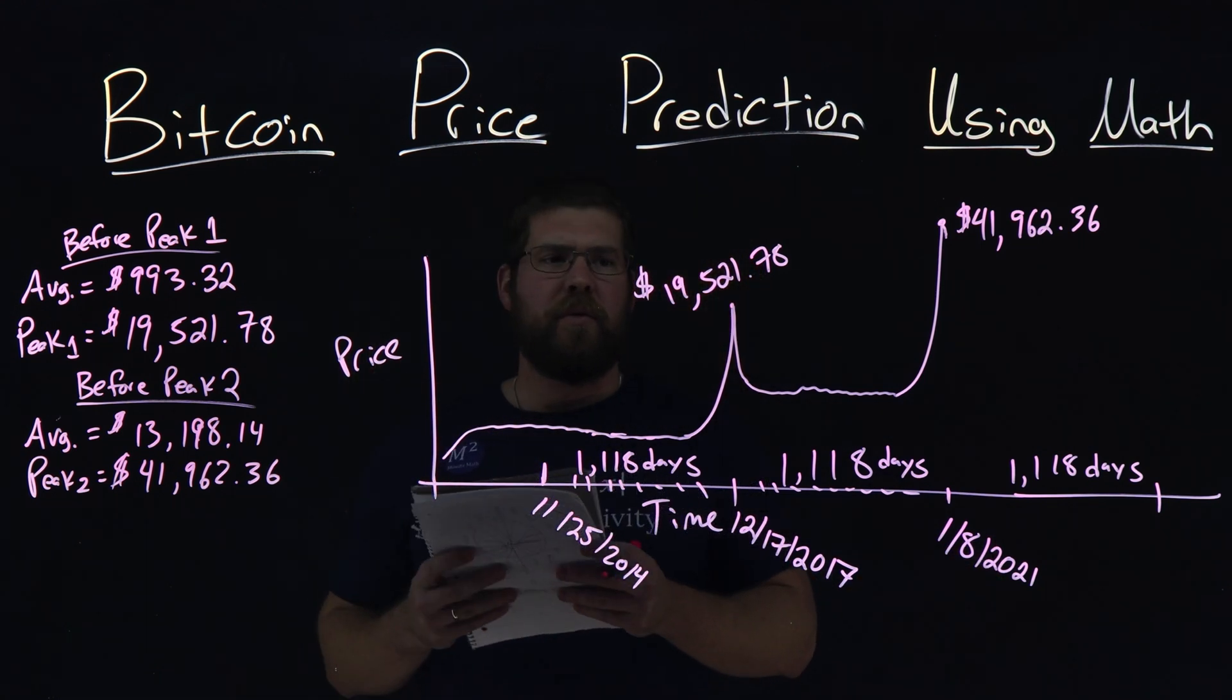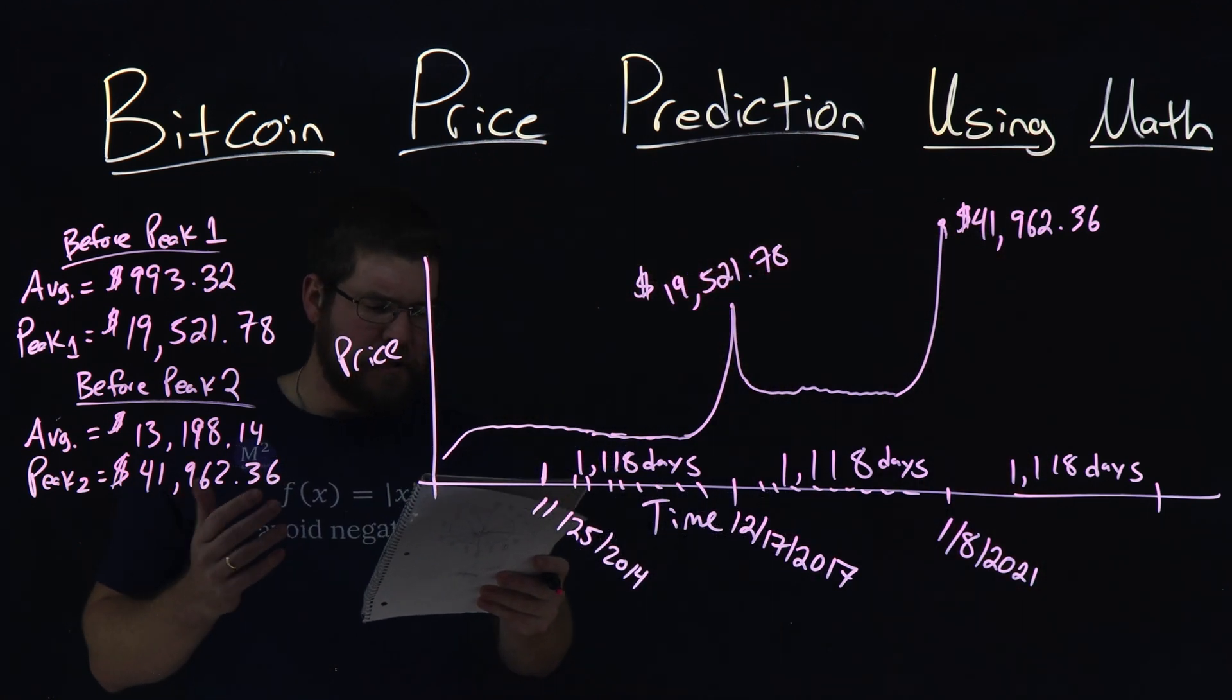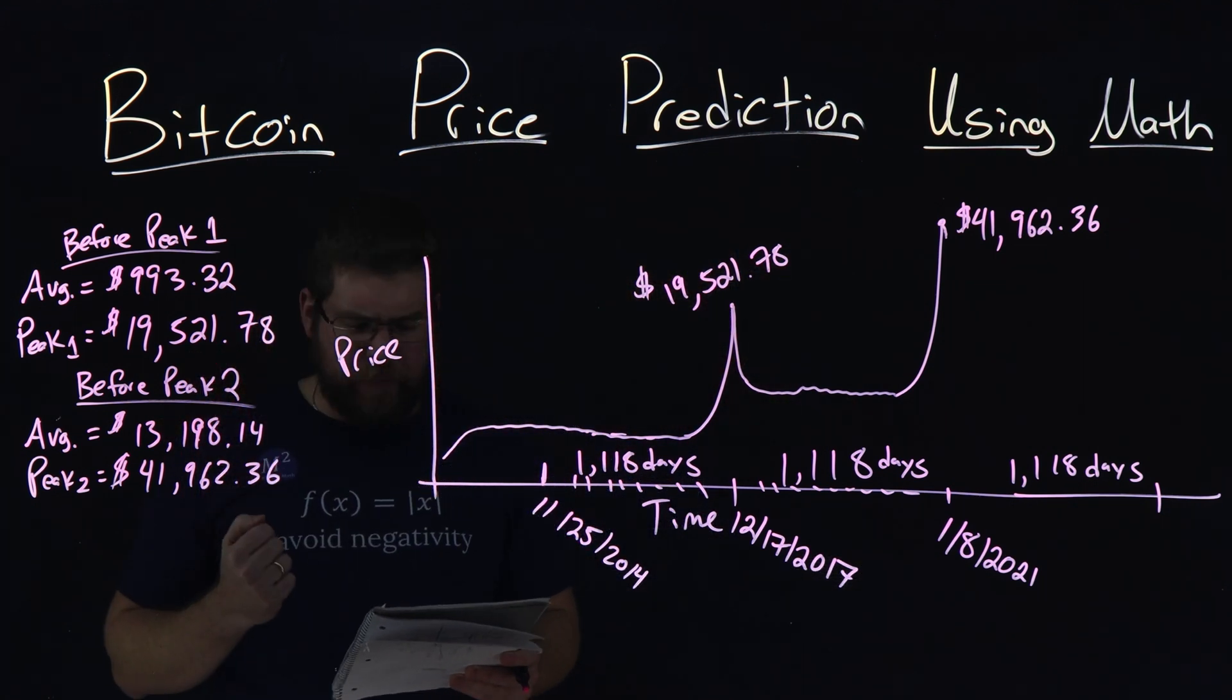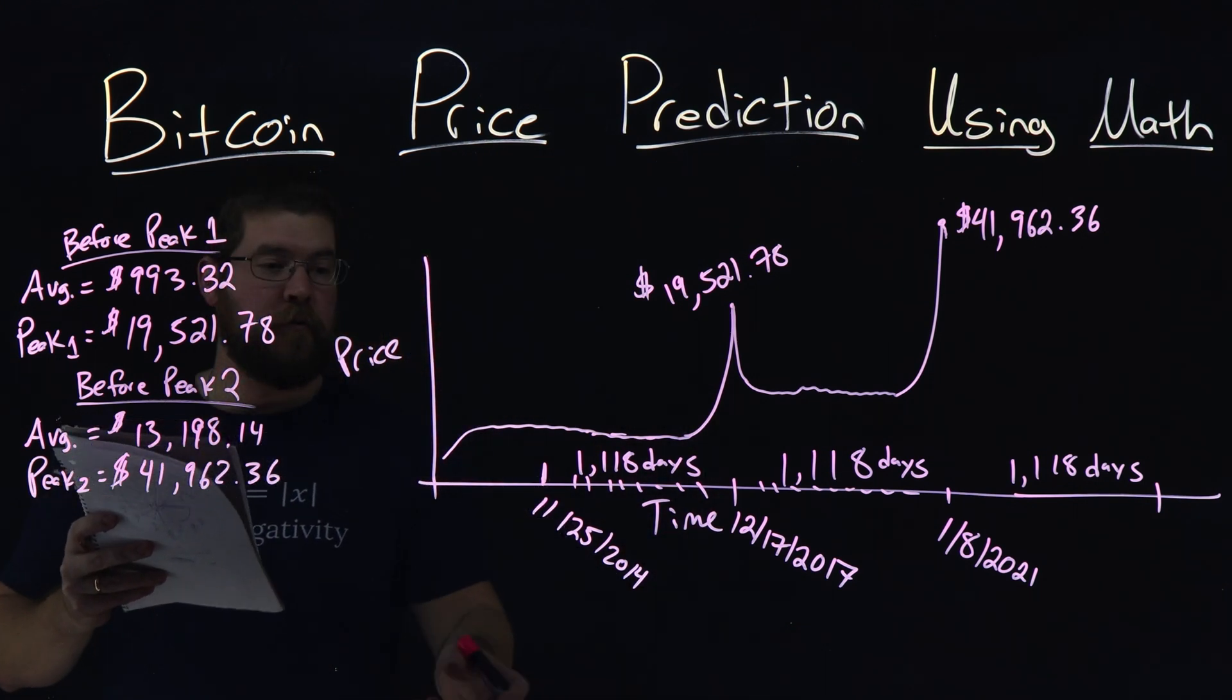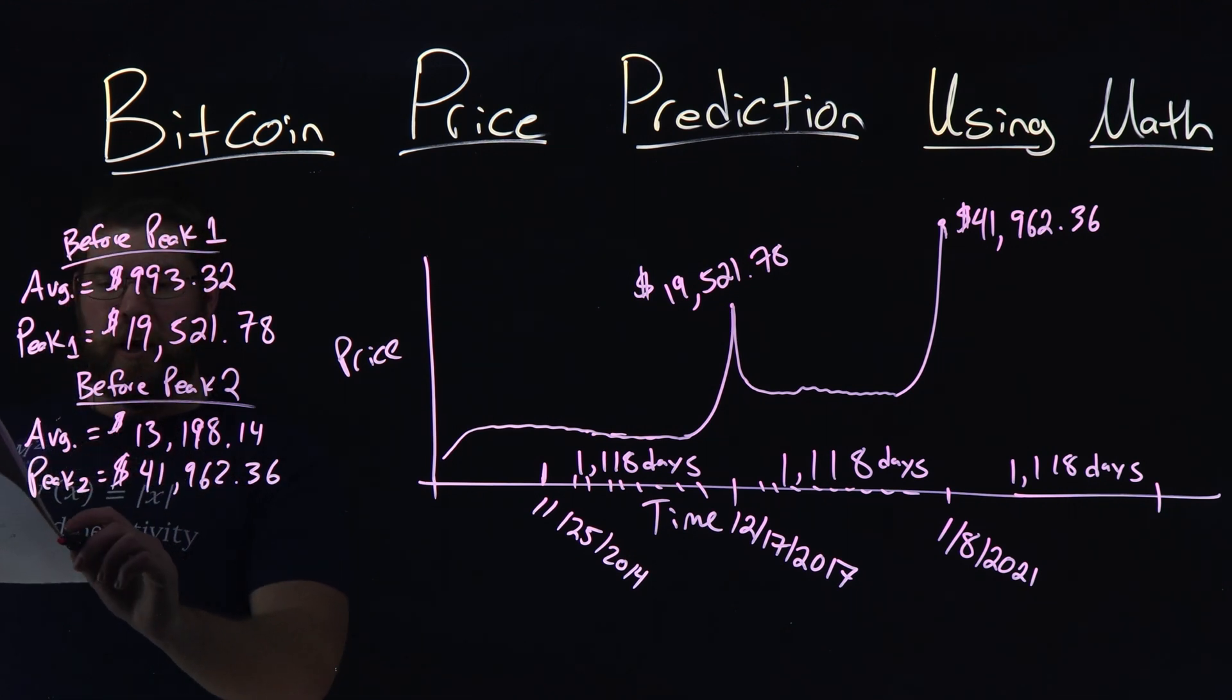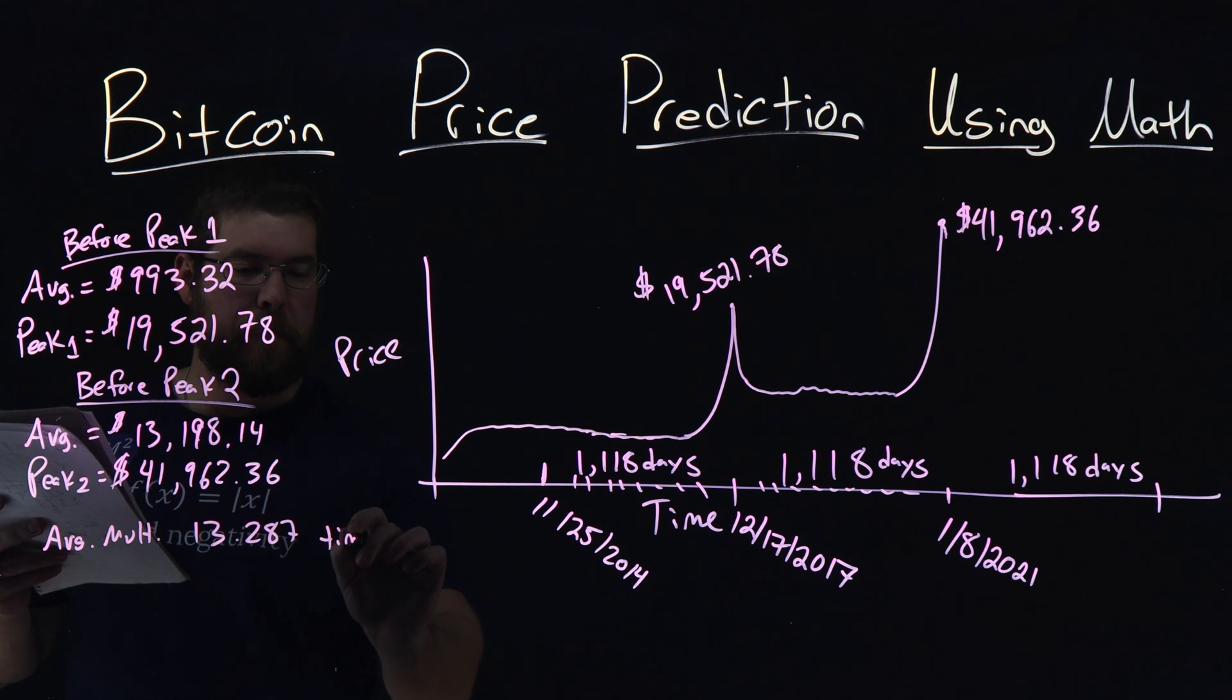And that average came out to be an average price of $13,198.14, and peak two, which we've already mentioned was $41,962.36. So I wanted to say, okay, well, if trends continue, what's going to happen after there? And so I first actually tried to find an average multiplier between each one and the peak multiplier. The average multiplier from peak one average to right before peak two average, we had an average multiplier of 13.287 times.